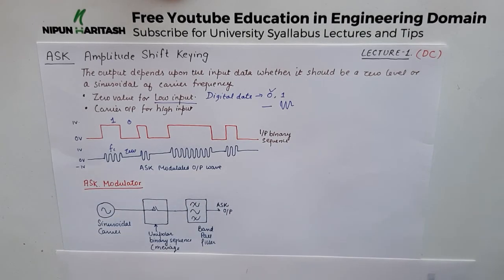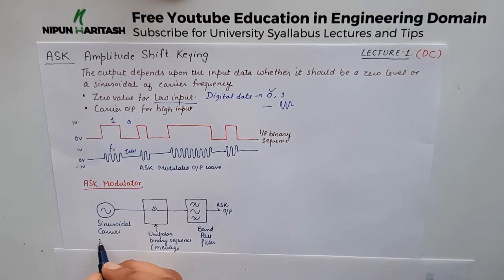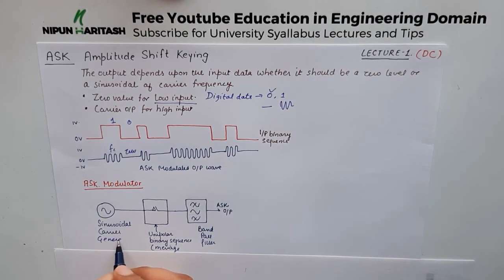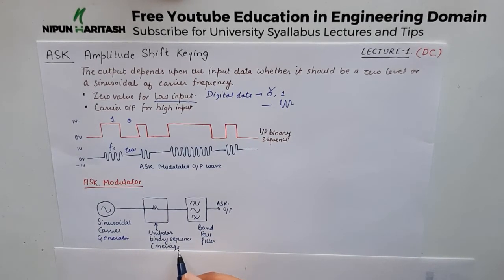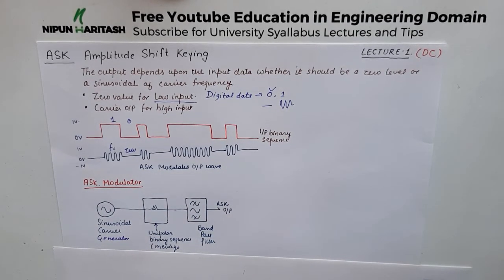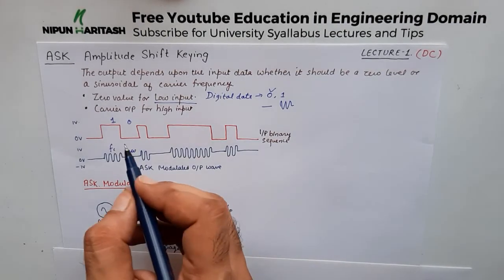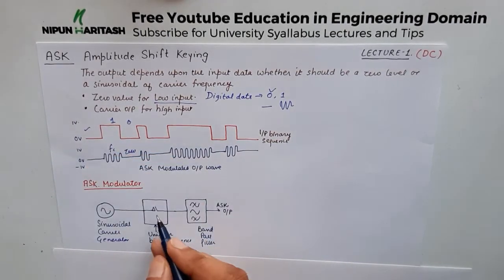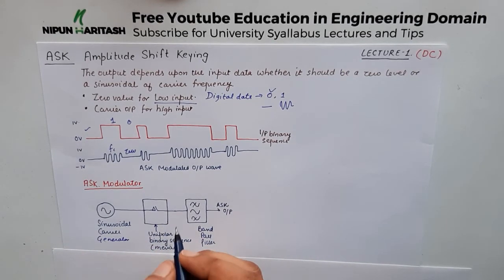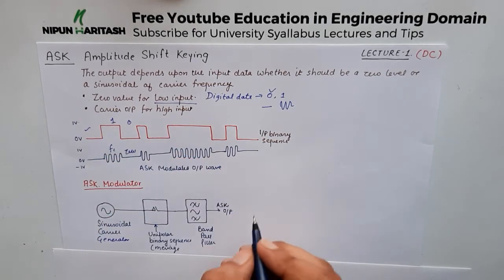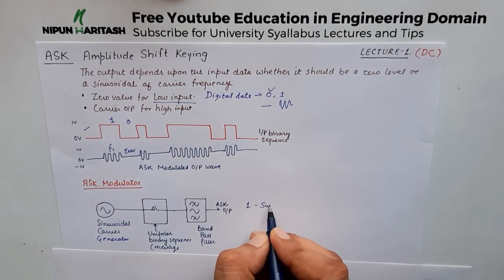The ASK modulator is pretty simple. We have the sinusoidal carrier generator, and then we have the unipolar binary sequence that we want to be modulated. This input signal goes here and it has a switch where at one the switch closes.